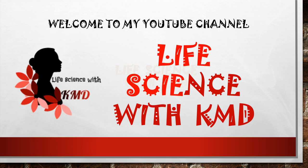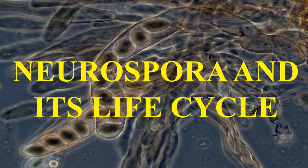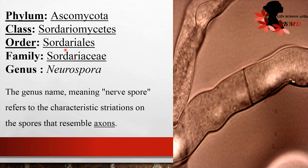Welcome to Life Science with KMD. Today I'm going to explain about Neurospora and its lifecycle. It belongs to phylum Ascomycota, class Sordariomycetes, order Sordariales, family Sordariaceae, genus Neurospora. The genus name meaning 'nerve spores' refers to characteristic striation on the spores that resemble axons. It is also called bakery mold or red bread mold. Neurospora resides on soil, papaya, burned vegetation, etc.